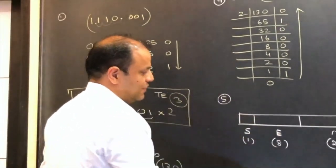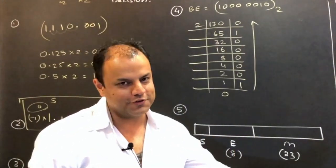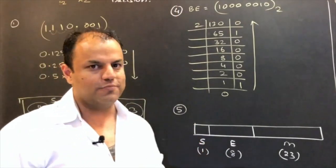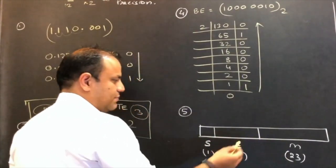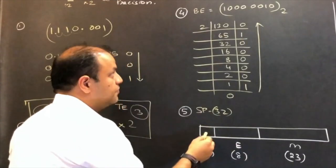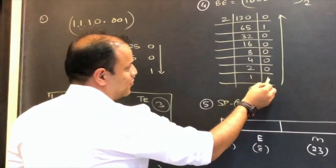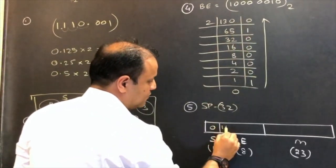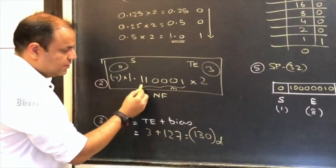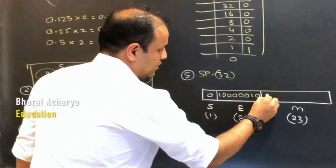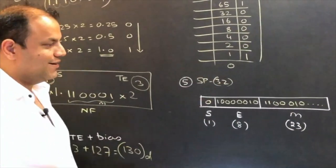Now you've got everything — sign, exponent, mantissa — just put them in the format. Sign is 1 bit, exponent is 8 bits, mantissa is 23 bits — that's your single precision 32-bit format. Because the number is positive, sign bit is 0. Exponent: 10000010. Mantissa: take the part after the point from the normalized form — 110001, and the remaining bits are zeros padded on the right, giving 23 bits total.